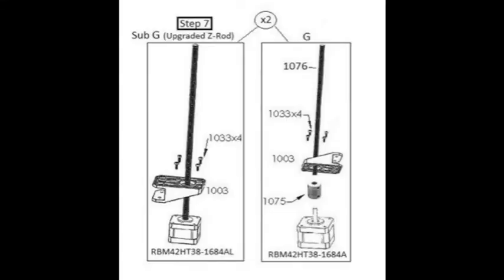For sub-assembly G, you'll either have the standard Z-motor shown on the right-hand side, or the Z-Route-Out grade shown on the left.